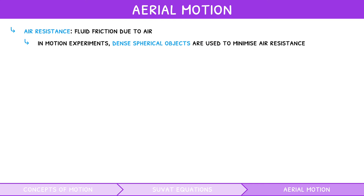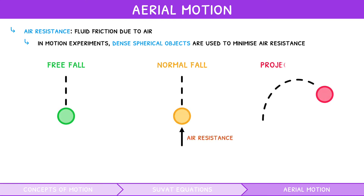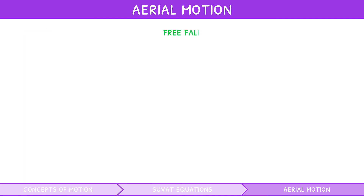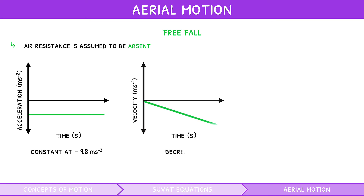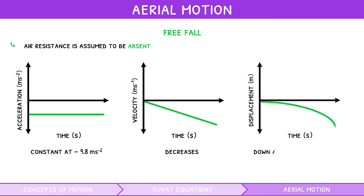The three aerial motion scenarios you could be asked about in your IB exam are free fall, normal fall, and projectile motion. During free fall, air resistance is assumed to be absent. Thus, the object experiences a constant acceleration of minus 9.8 metres per second squared throughout its fall. As a result, velocity decreases and displacement curves down at an increasing rate. In any question or experiment, objects are assumed to be in free fall unless specified otherwise.